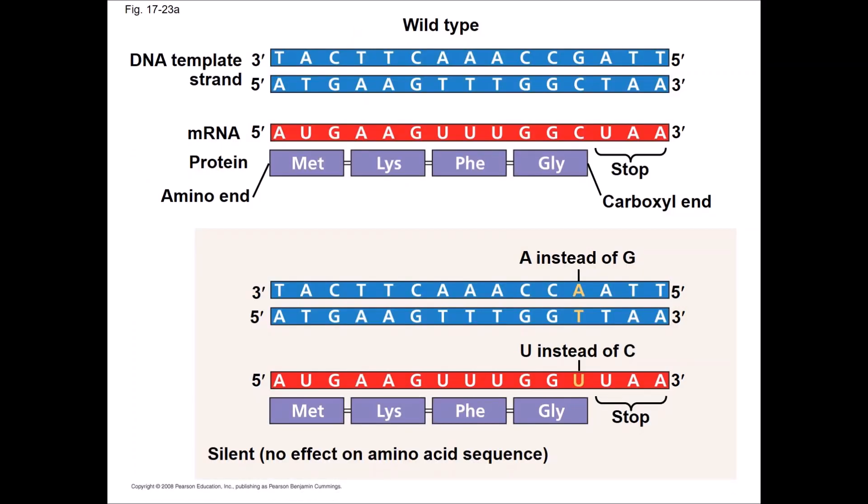Point mutations can also be silent — in this case they have no effect on amino acid sequence. In this example, a G to A mutation results in a GGU codon instead of a GGC codon. Both of these code for the same amino acid, glycine.